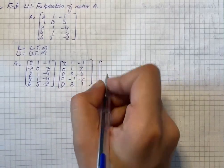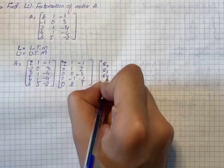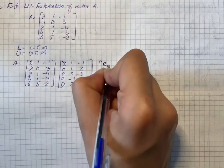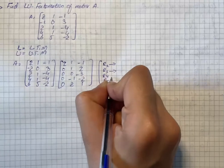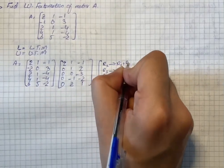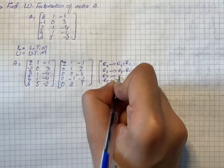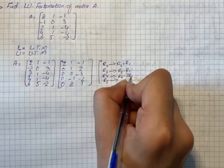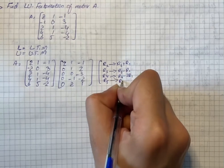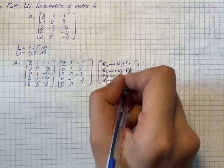We can write that R2, R3, R4, and R5 for all of them we will write the operations. We have R2 plus R1, R3 minus R1, R4 minus 2R1, and R5 minus 3R1.